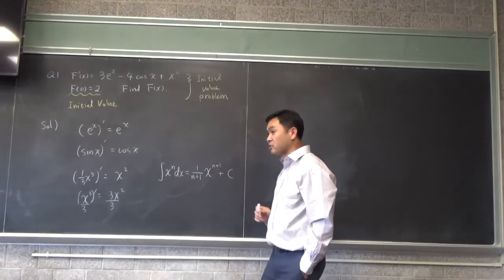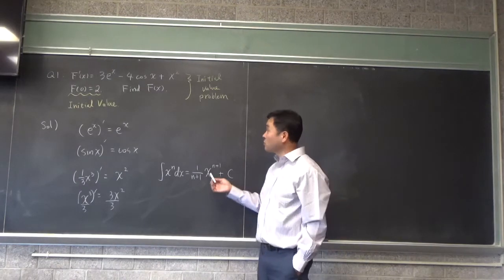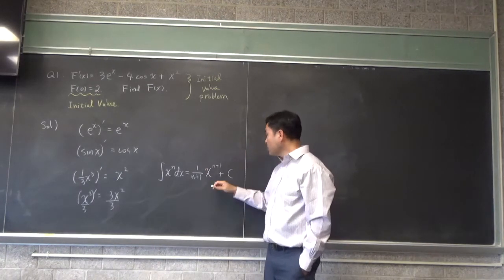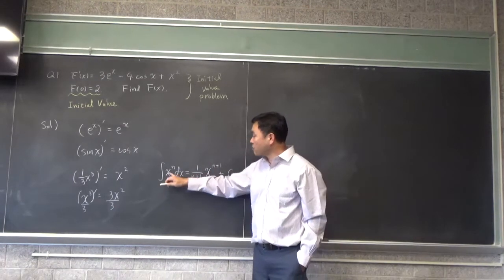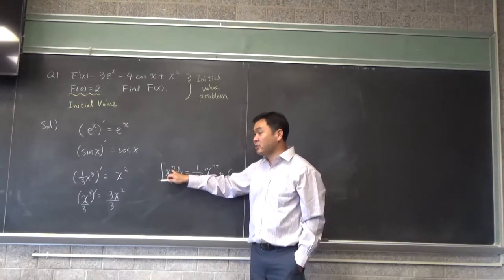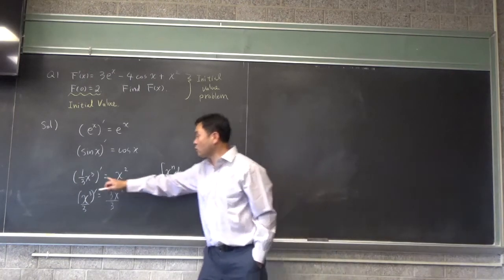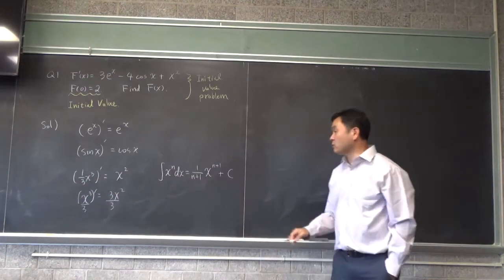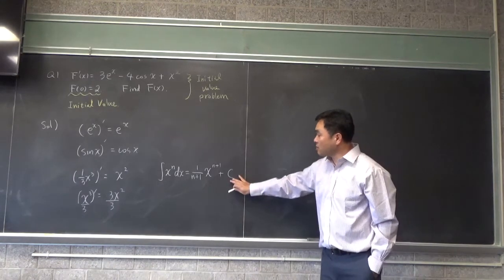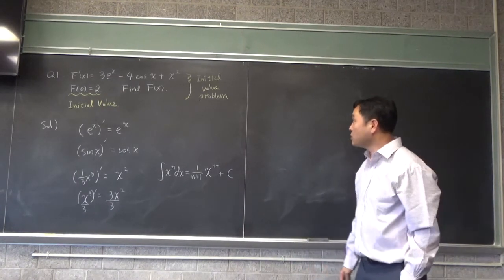The plus c is the integration constant. It always appears when you find the antiderivative. Applying this formula for x squared where n is 2 will give you 2 plus 1, that's 3, and 1 over 3 — that's why you get one-third x cubed. That's another way to get it, and I'll discuss this a bit more after this problem is solved.